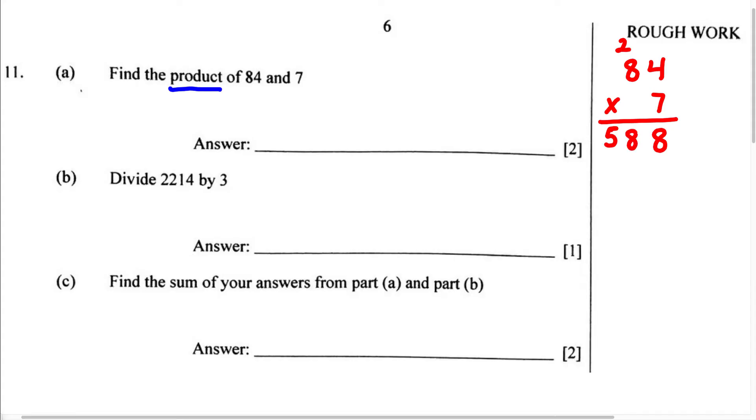Therefore, the product of 84 and 7 is going to be 588. This is our answer.